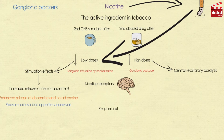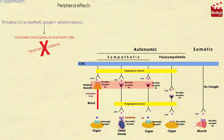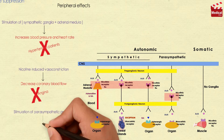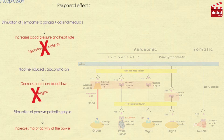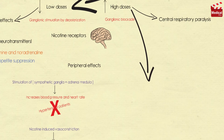The peripheral effects of nicotine are complex. Stimulation of sympathetic ganglia as well as of the adrenal medulla increases blood pressure and heart rate; thus use of tobacco is particularly harmful in hypertensive patients. Nicotine-induced vasoconstriction can decrease coronary blood flow, adversely affecting patients with angina. Stimulation of parasympathetic ganglia also increases motor activity of the bowel.